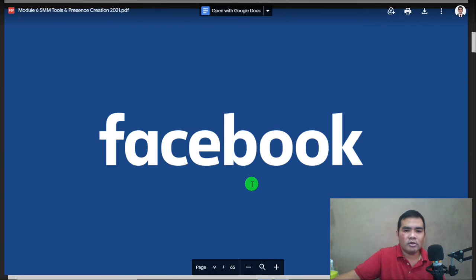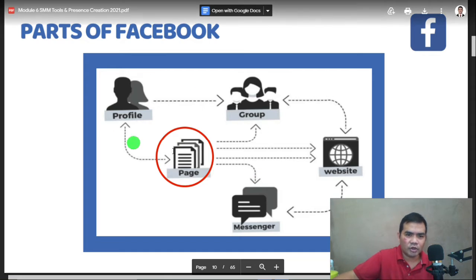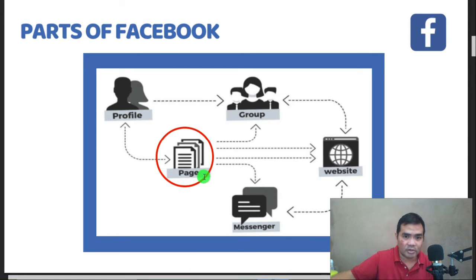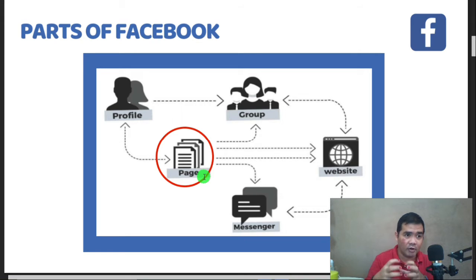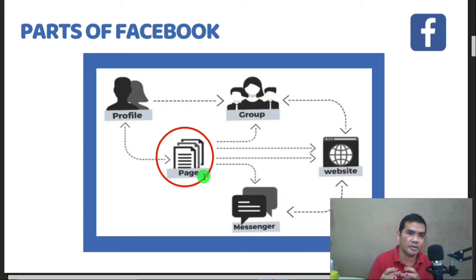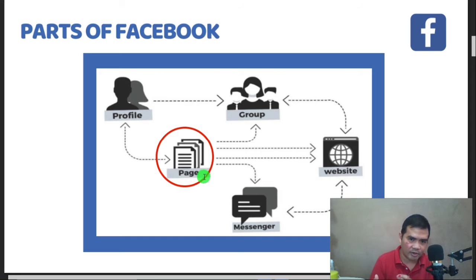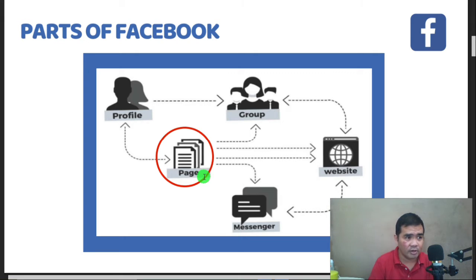For Facebook, its ecosystem includes your profile, your page — which is our top priority in this module, so you should create a business page — your group or community, and your website. The website is the endpoint for your customers, where they can shop and explore other features. The different parts of Facebook are your driving force to bring customers to your website and convert them to sales.